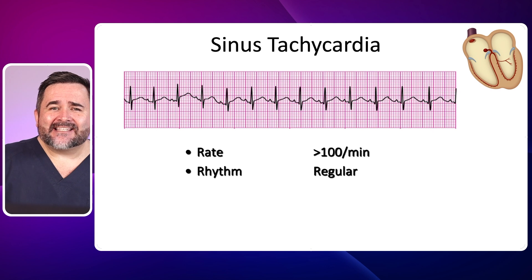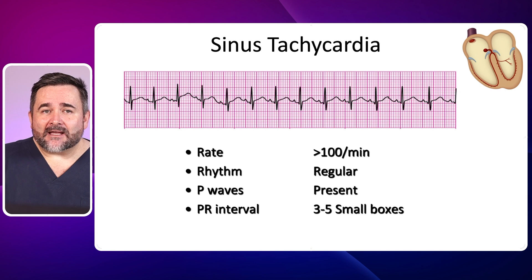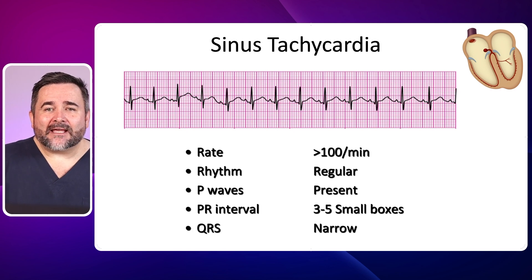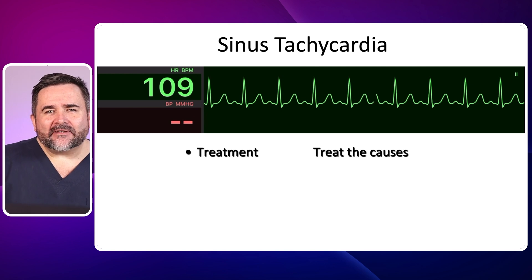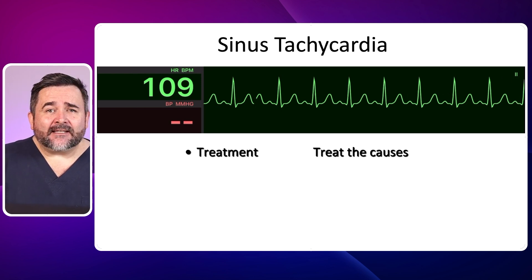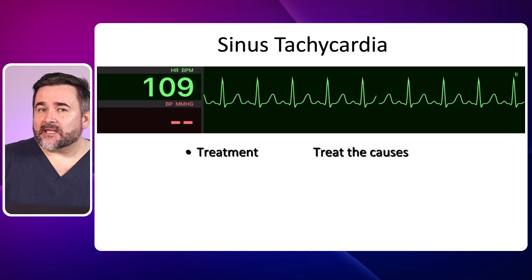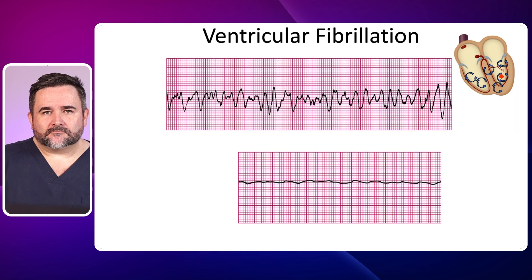Sinus tachycardia looks exactly like a normal sinus rhythm but this time the rate is above 100 beats per minute. The rhythm is regular, P waves are present, the PR interval is 3 to 5 small boxes, and the QRS complex is narrow. Here we have sinus tachycardia at a rate of 109 beats per minute. Sinus tachycardia can be caused by exertion, anxiety, hypovolemia, and hypoxia, to mention a few. Treat the causes of the tachycardia.